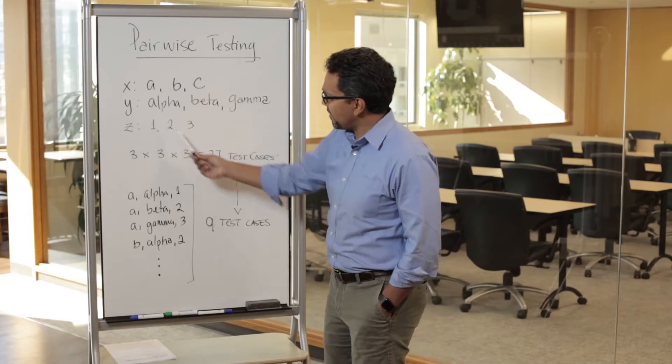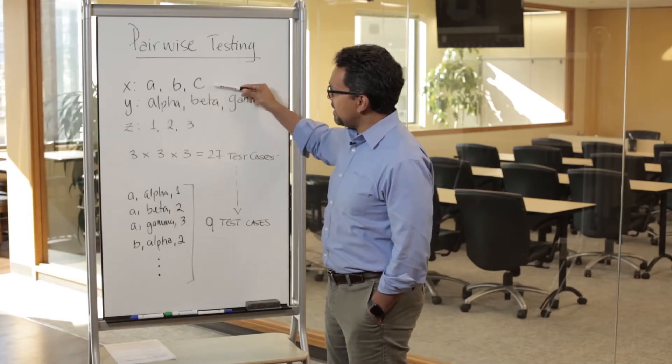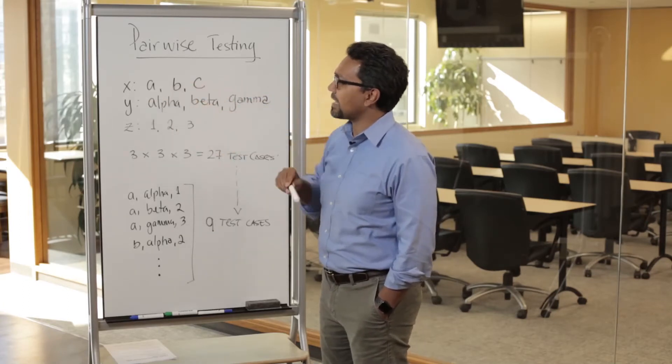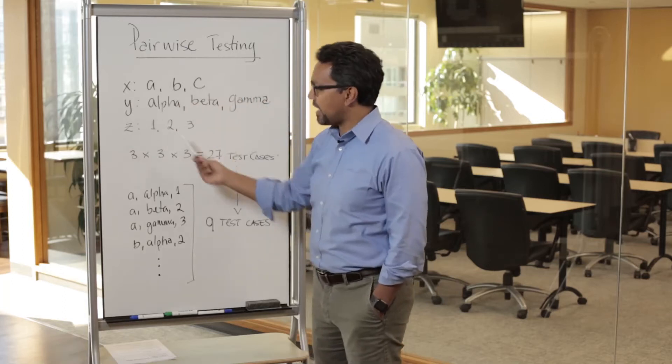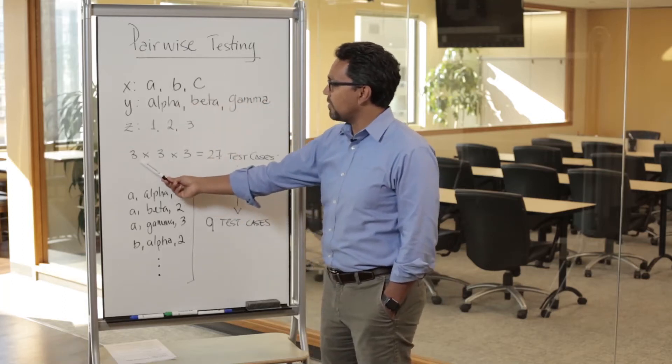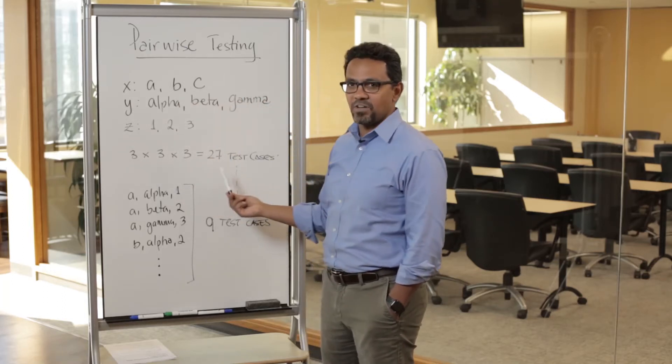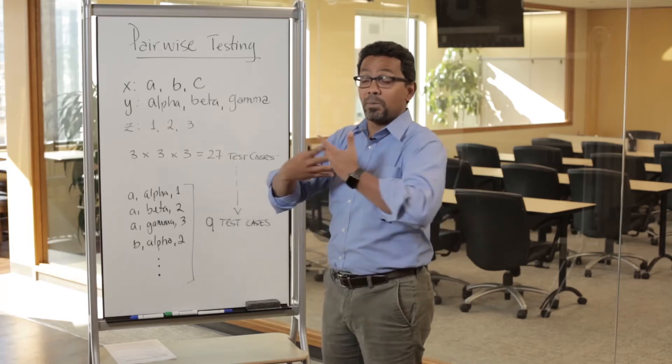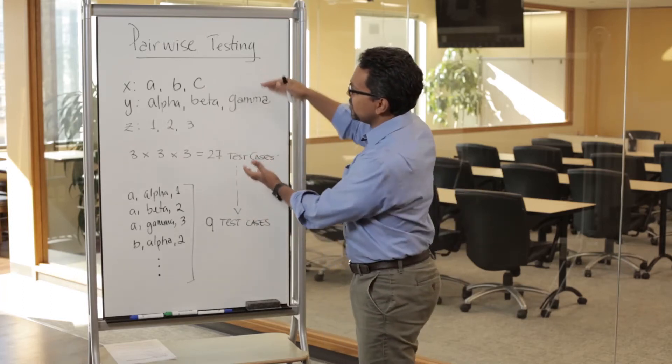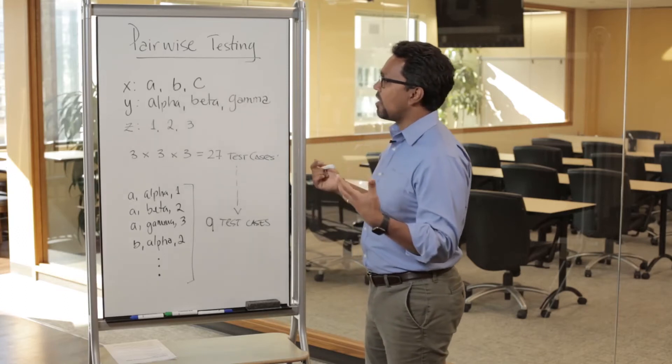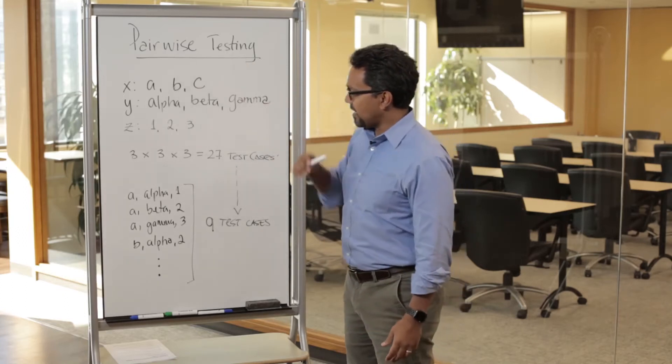We can go from—let's say if we have this scenario, we have three possibilities for each one of these factors. If we like to test everything, that means that we need to have three by three by three: 27 test cases if we like to test all possible triplets. Now how can we reduce this and still have good coverage applying this idea of pairwise or all pairs?